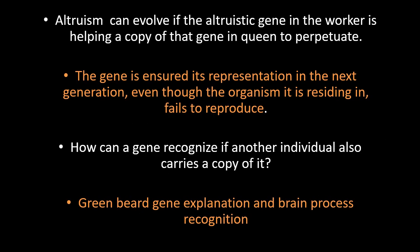Altruism in ants and bees can evolve if the gene causing altruism in the workers — the altruist — is helping another copy of that gene in another individual such as the queen and her offspring. By doing this, the gene ensures its representation in the next generation even though the organism in which it resides fails to reproduce. Another mechanism suggested is that specialized brain processes evolve over time to allow individuals to discriminate among other members of the same species, helping to identify the genes.